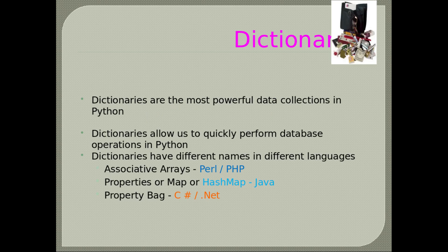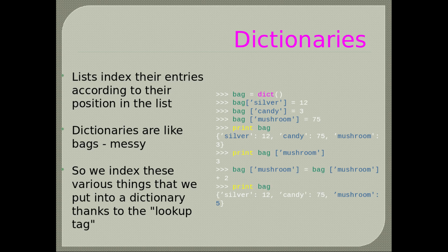Python Dictionaries: dictionaries are the most powerful data collections in Python, allowing us to quickly perform database-like operations. They have different names in different languages: associative arrays in Perl/PHP, properties or HashMap in Java, property bag in C#/.NET. Dictionaries use keys to index their entries. Here's an example of a dictionary called bag: initialized in the first statement, then you enter items with corresponding count numbers. You can print the entire dictionary or an individual item by key, and modify a value — adding 2 to mushroom count makes it 5.